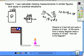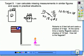I have the problem. Roberta is 5 feet tall and casts a shadow of 4 feet. At the same time, a nearby flagpole casts a shadow of 10 feet. How tall is the flagpole?